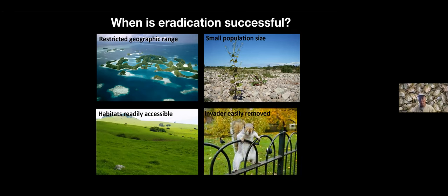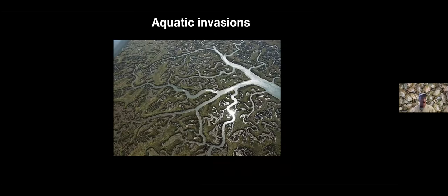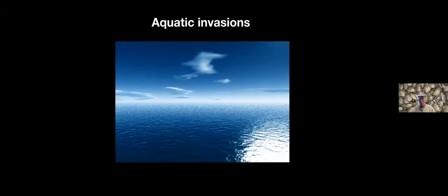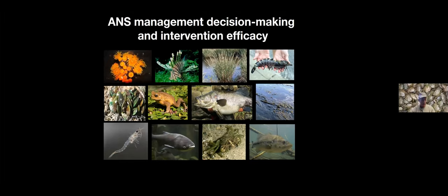However, aquatic invasions are really quite different. A complicated maze of estuaries and channels would be very difficult to eradicate a species from. Open ocean or nearshore coastal areas and bays are extremely difficult because you can't necessarily see what's below the water. So there's a whole category of invasions where eradication is going to be very, very difficult.